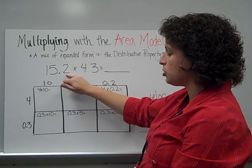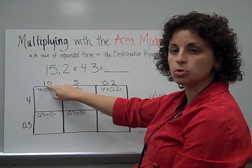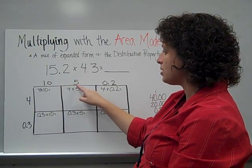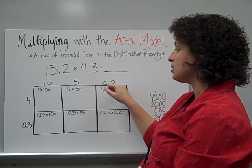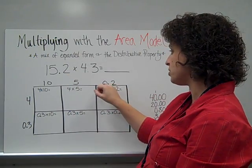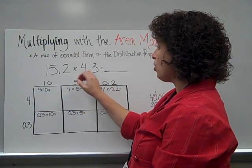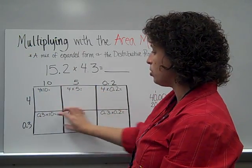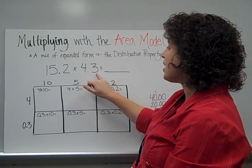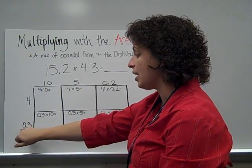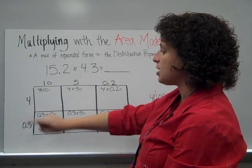I'm breaking fifteen and two-tenths apart into expanded form. That one is in the tens place, so it's worth ten. Five in the ones place, it's worth five. Two in the tenths place, so it's worth zero and two-tenths — and you need to put the zero, decimal, then the two; you'll see why in just a moment. Times four and three-tenths, these are my rows going across. I've got a row for the four, which was in the ones place, and a three in the tenths place, so again, zero and three-tenths.